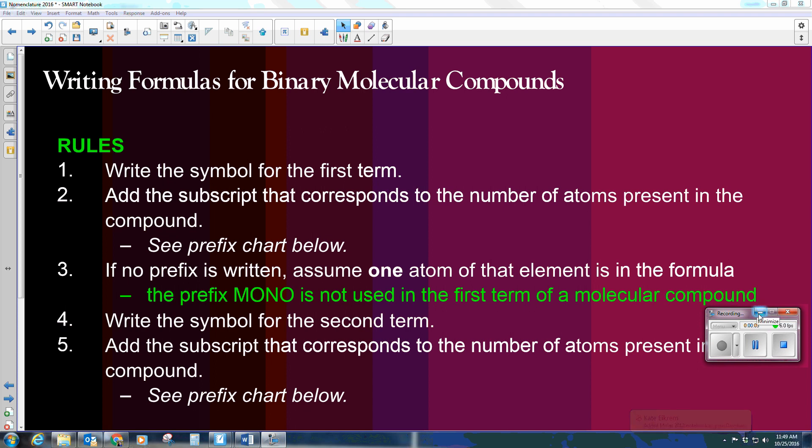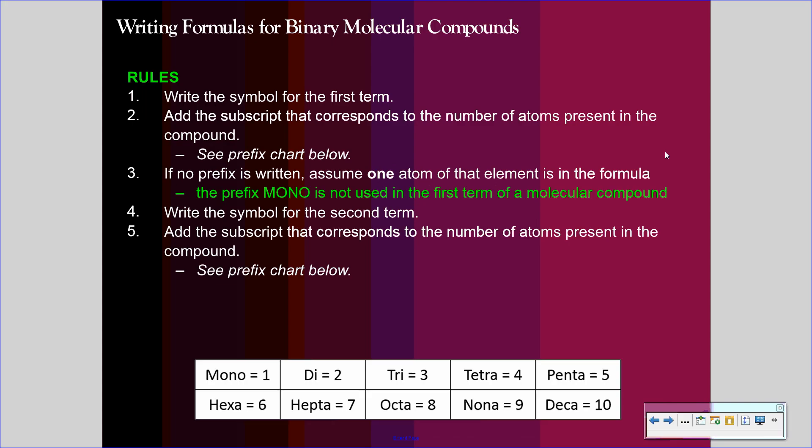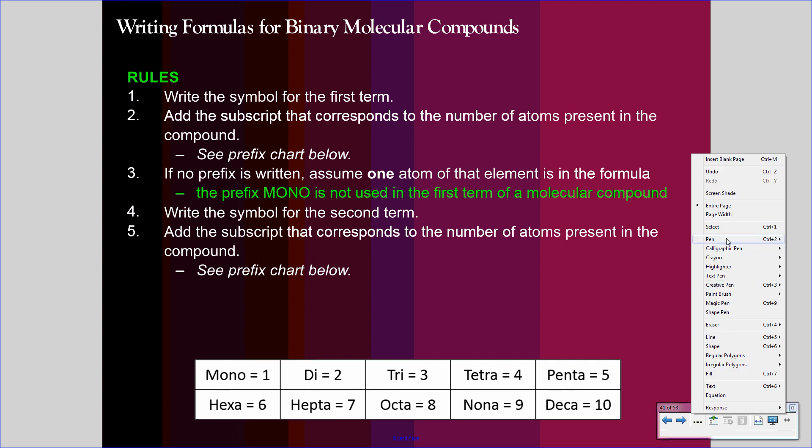Hello and welcome to our discussion on writing formulas and naming binary molecular compounds. First thing you need to know is that covalent molecular compounds are constructed of only non-metals. Only non-metals will be present in these compounds. You may occasionally see a metalloid and that's okay, but you will not see metals acting as ions at all in these compounds. So knowing that, let's get started.